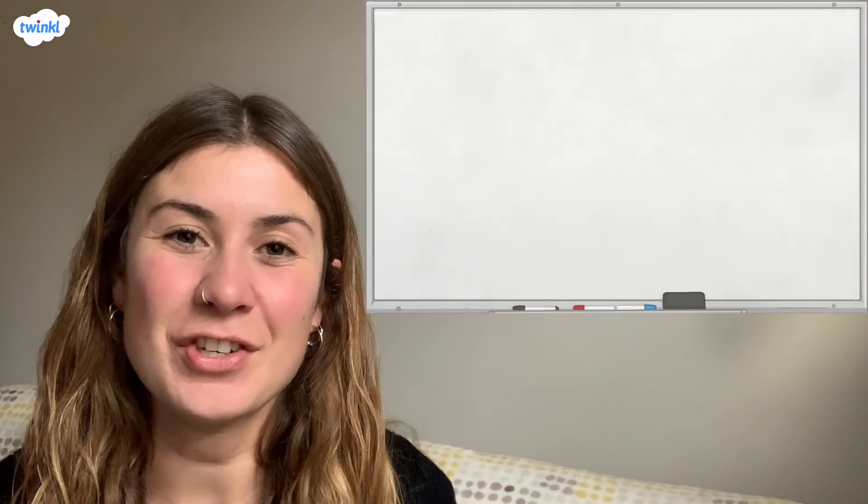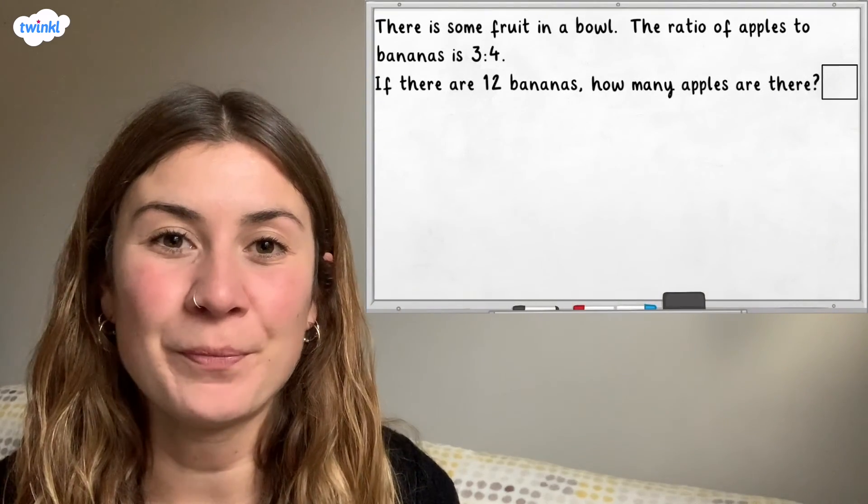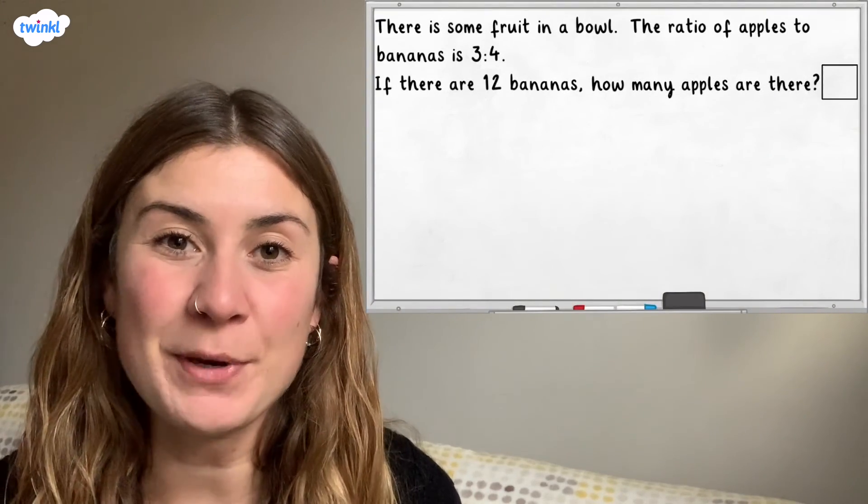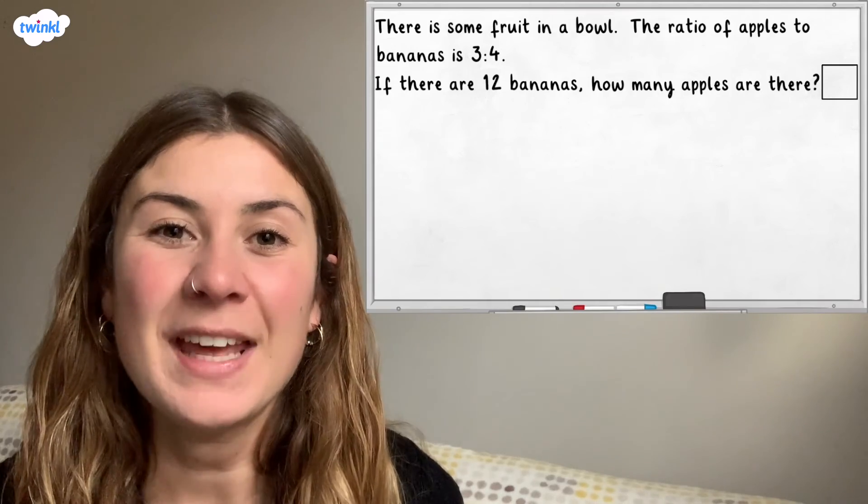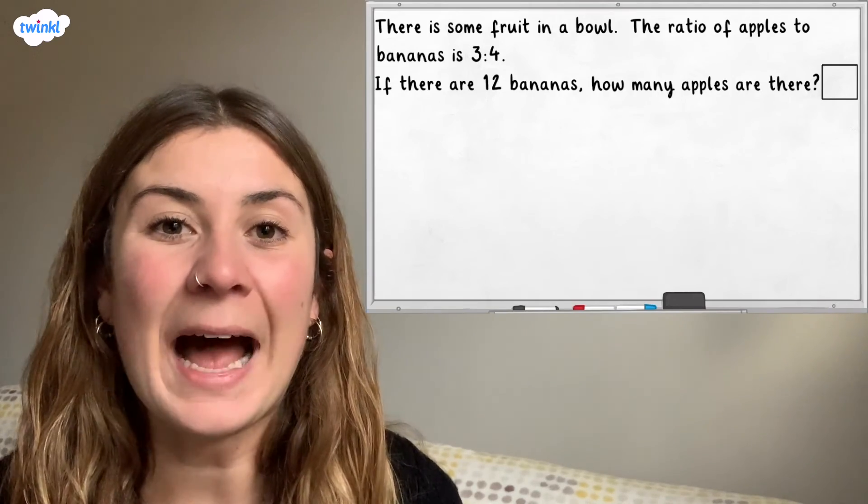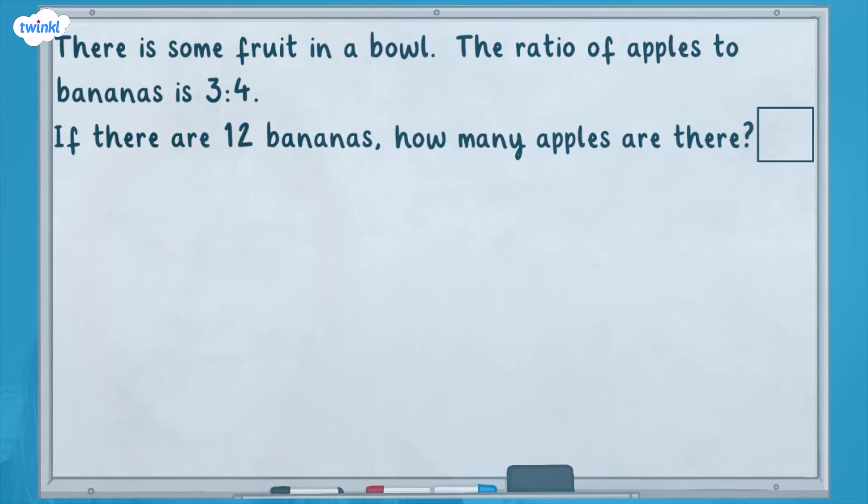Now it's time for a challenge. There is some fruit in a bowl. The ratio of apples to bananas is three to four. If there are 12 bananas, how many apples are there? Pause here and have a go at solving this problem. If you're stuck, unpause for a visual clue.